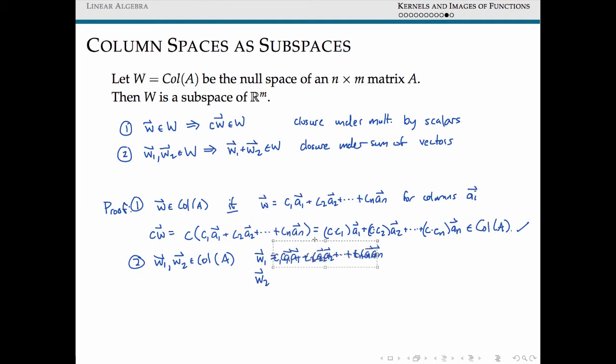W2 can be written as some linear combination, where instead of Cs, let's say, replace these with some Bs. So B1, B2 through Bn.